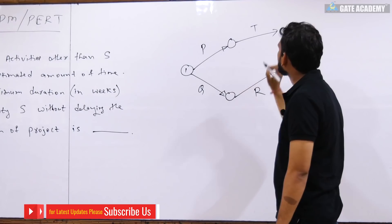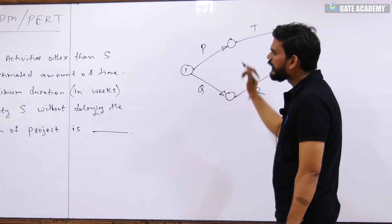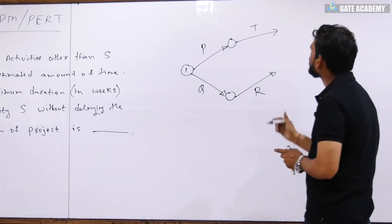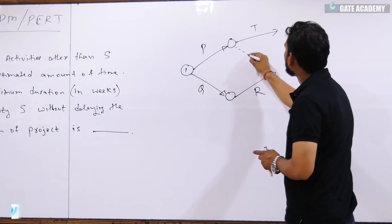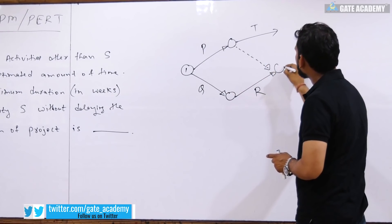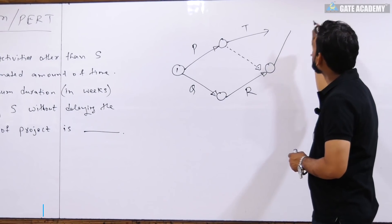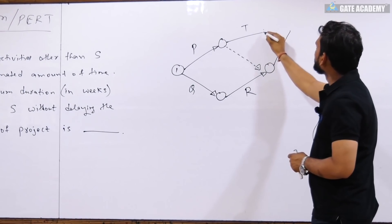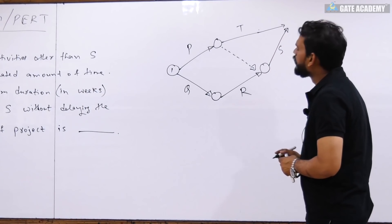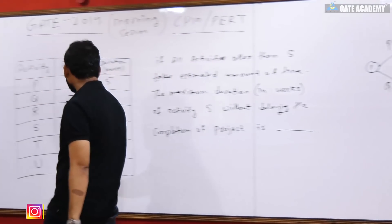P will start from the beginning node, and where P completes, notice that S starts where both P and R are complete. That means from where P and R arrive together, S will start from that point — so S starts here at that node.